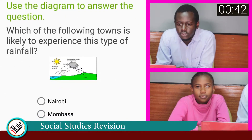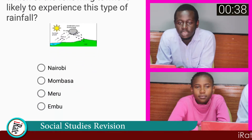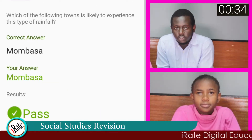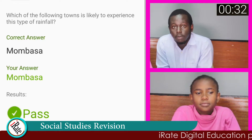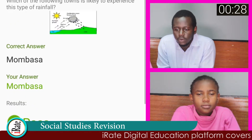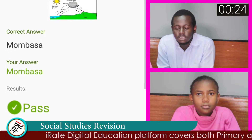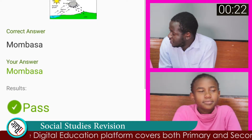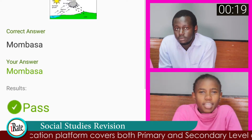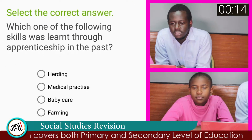Question number nine: Use the diagram to answer — which of the following towns is likely to experience this type of rainfall? The correct answer is Mombasa. The student is correct. Conventional rainfall occurs when warm air deflected from a landform rises and forms rain clouds. Apart from conventional rainfall, what other type do you know? Orographic rainfall, also known as relief rainfall.